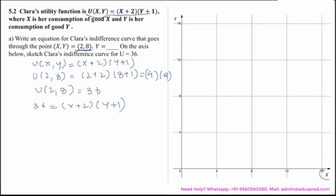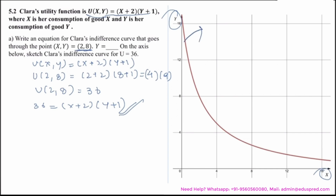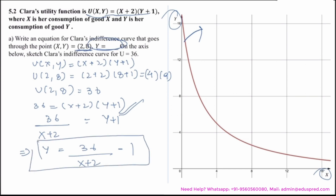On the graph, the x-axis has good x and the y-axis has good y. If we plot this equation, it looks like the red indifference curve, which gives Clara the utility of 36. Simplifying the equation: 36/(x+2) = y+1, or rearranging, y = 36/(x+2) − 1. This is the equation of the indifference curve passing through the point (2, 8) giving Clara utility of 36.